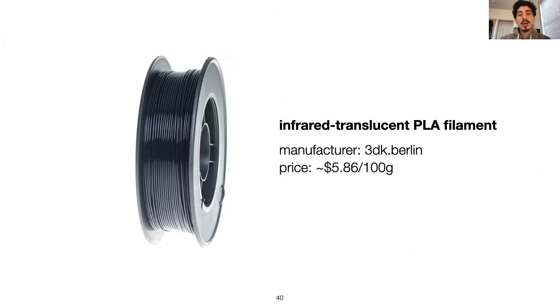For our goal, we had to find an infrared-translucent 3D-printable material, and after extensive testing, we decided to use a filament manufactured by 3DK Berlin. Since this filament is based on the most common 3D printing material, PLA, it is as affordable as regular filaments and can be printed at regular temperatures.